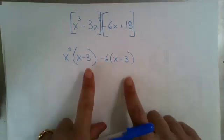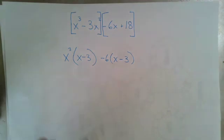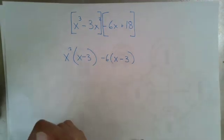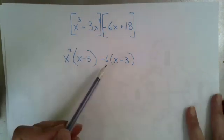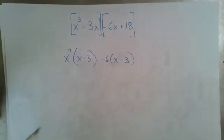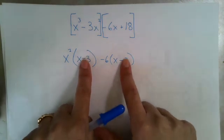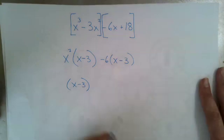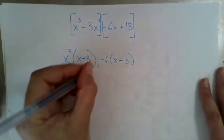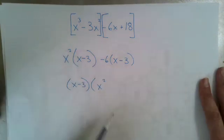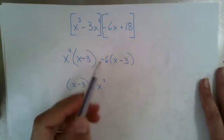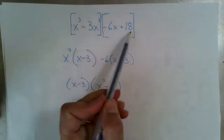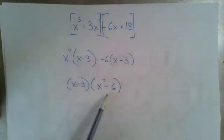Now we check: are these two things the same? Yes, they are. If we had just factored out a 6, they would not look the same, and we'd realize we need to pull out a negative 6 instead. So now we're going to pull x minus 3 out of both terms. What's left in the first term is x squared, and what's left in the second term is negative 6. And we have now factored this polynomial through grouping.